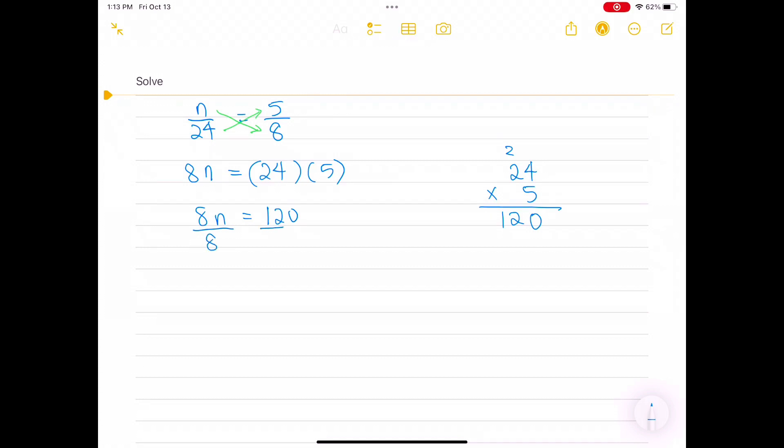Now we are ready to solve for N by dividing 8N by 8. And whatever we do on one side of the equation, we must do on the other side of the equation. And on the right-hand side, we have 120 divided by 8. We do that calculation on the side, which we find equals 15. On the left-hand side, the 8s cancel, leaving N by itself. We rewrite the equal sign, and on the right-hand side, we have 15. N equals 15, and we box our answer. So 15 twenty-fourths is equal to 5 eighths.